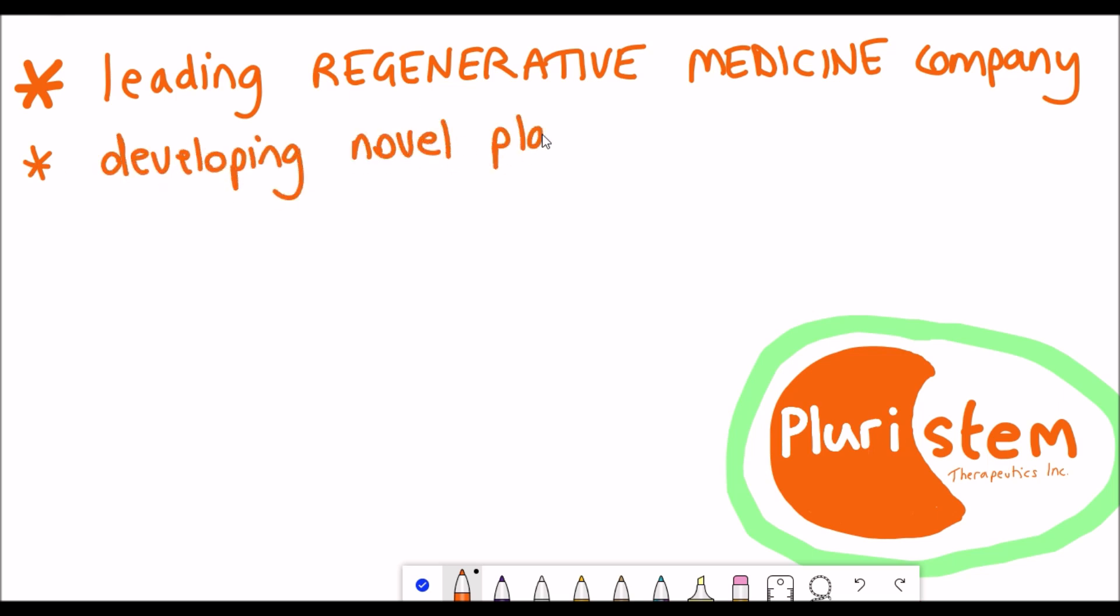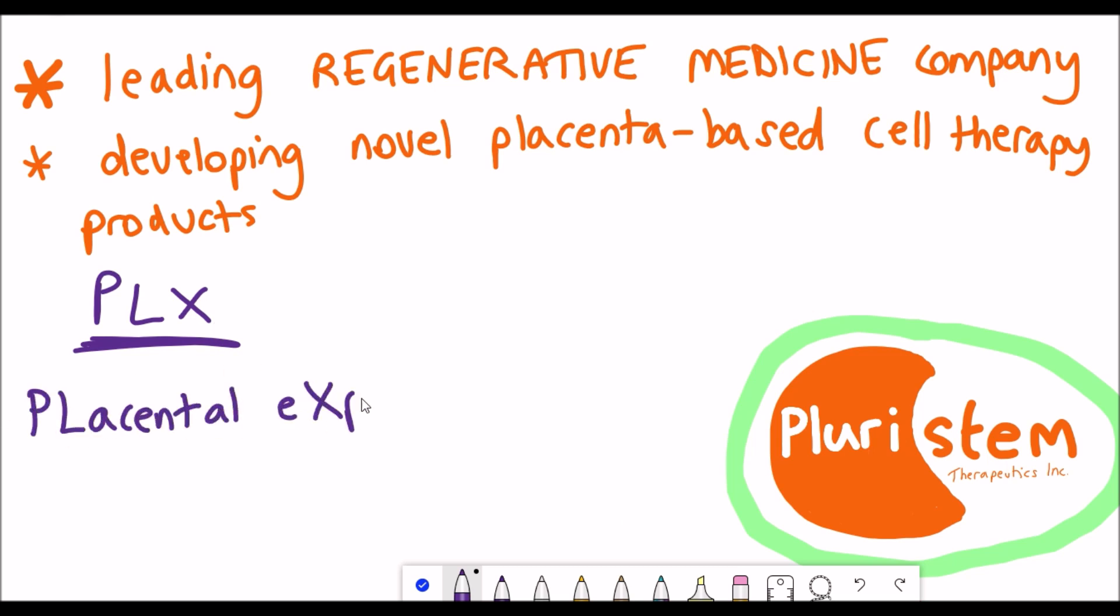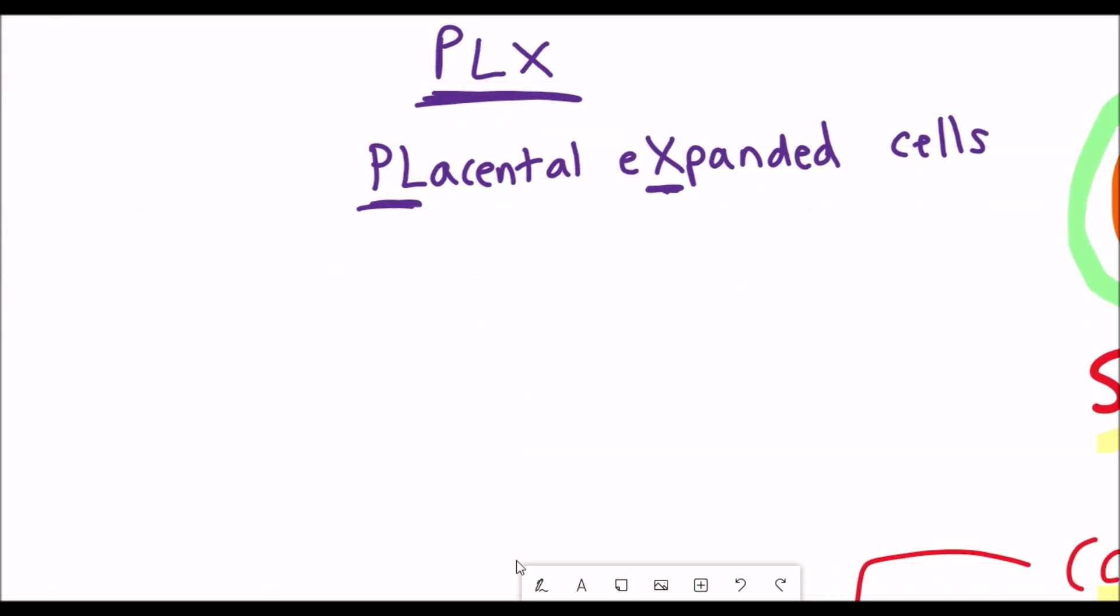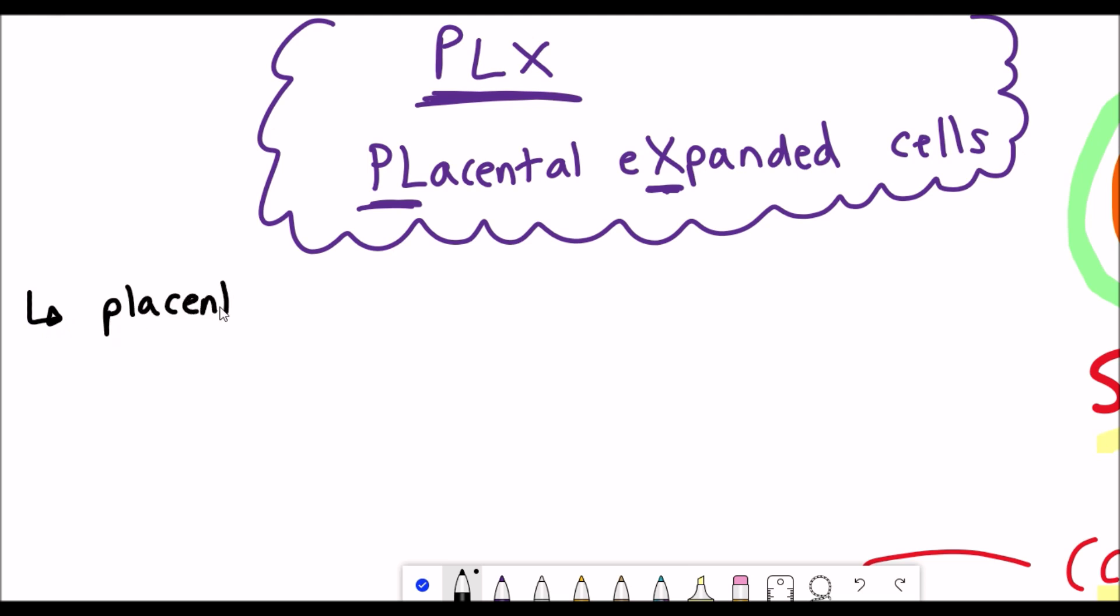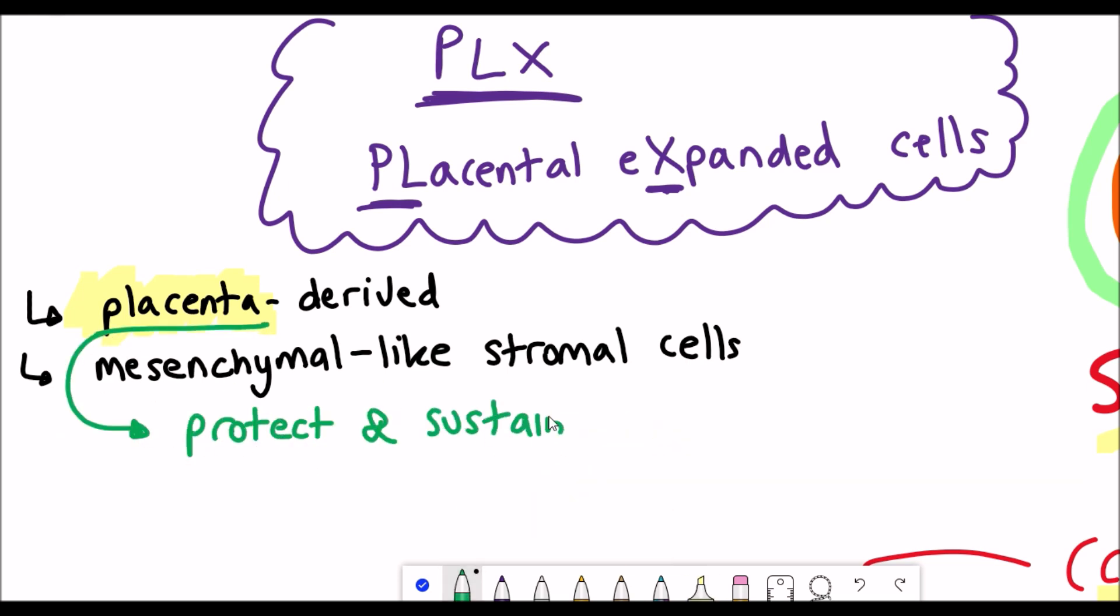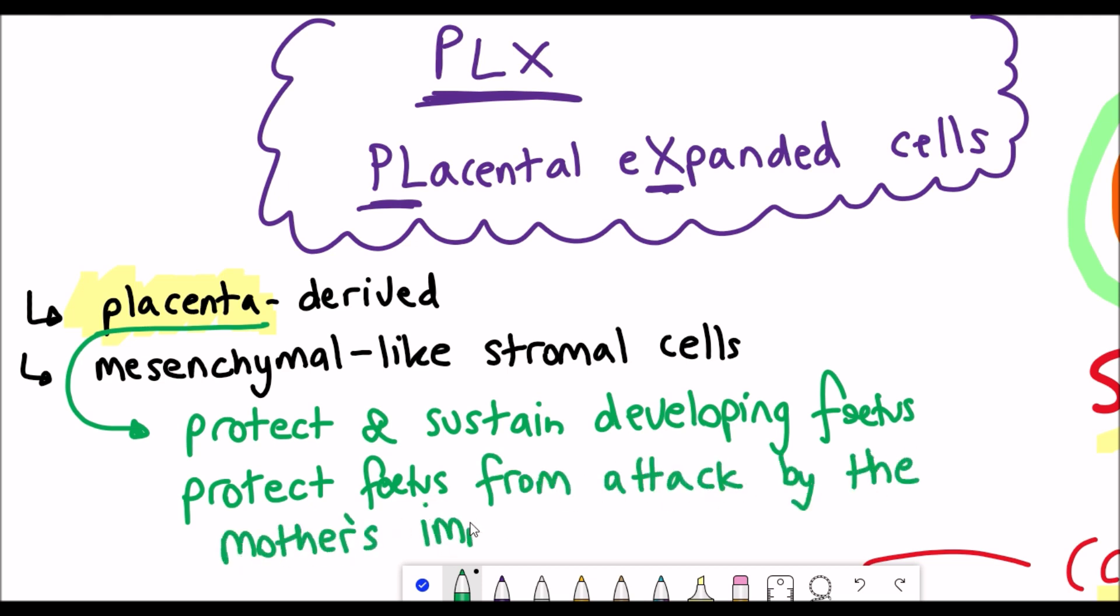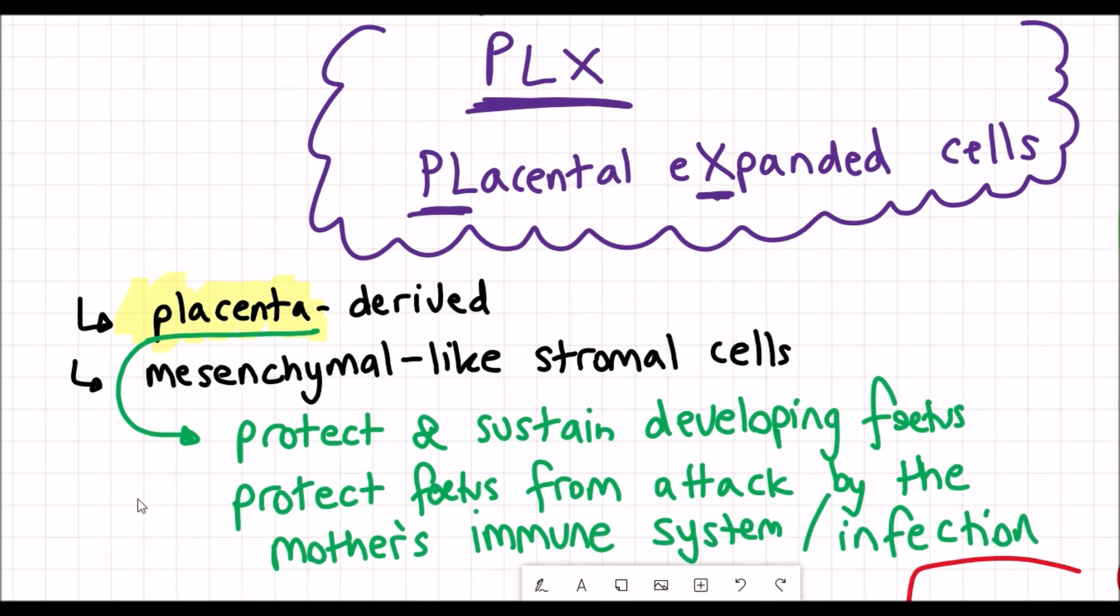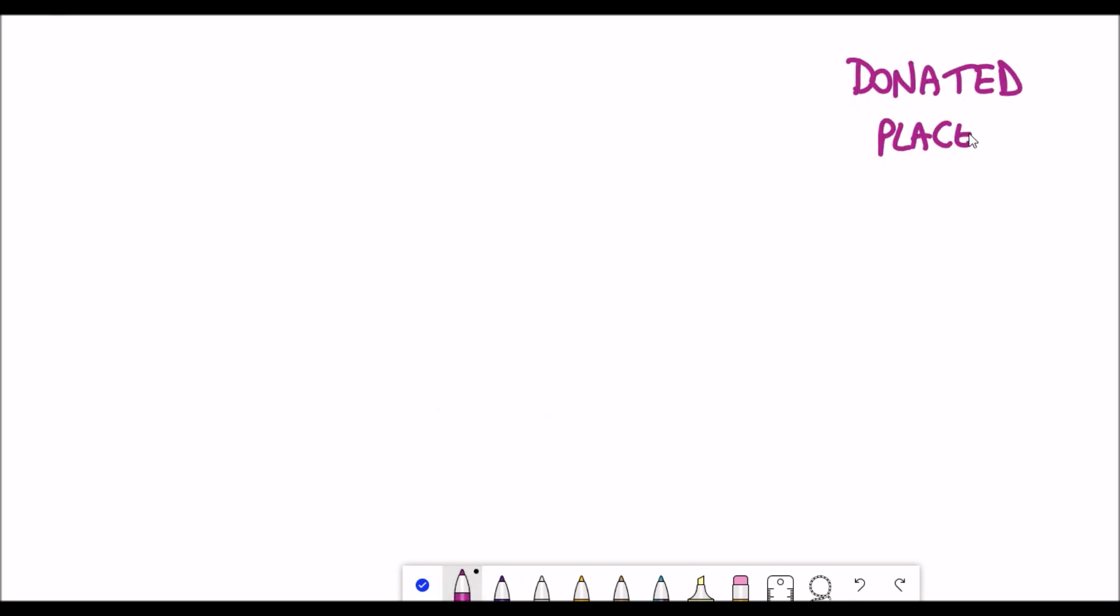What about Pluristem? Pluristem is a leading regenerative medicine company developing novel placenta-based cell therapy products. Unlike Athersys that took cells from bone marrow, Pluristem is using placental expanded cells, hence the name of their product which they call PLX. As guessed by their name, they are derived from the placenta. Similarly to the Multistem cells, they are mesenchymal-like stromal cells with the same stem cell capability.